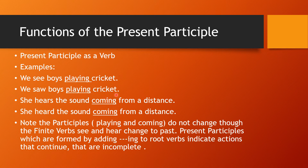These examples also show that the action still continues. So the present participle is used to form the continuous tense where the action is still going on. 'We see boys playing cricket' — the boys are still playing cricket. 'We saw boys playing cricket' — the action is still continuing. Therefore, this present participle functions as a verb and is used to form the continuous tense.